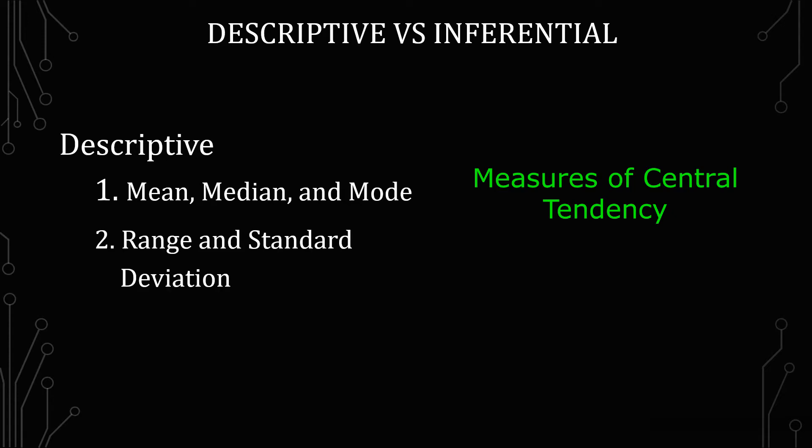The second type of statistic I want to go over is the range and standard deviation. So this is looking at the dispersion of the data. So how far does the data go, or how far does it spread? Even with how far does it spread, what is the typical concentration of that spread? And so you have the range and standard deviation that kind of measure those two things.